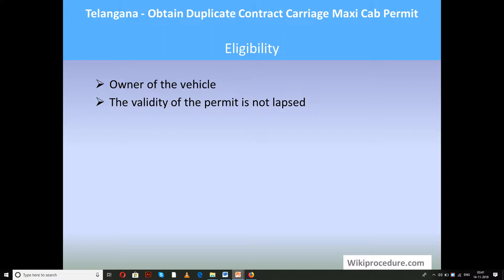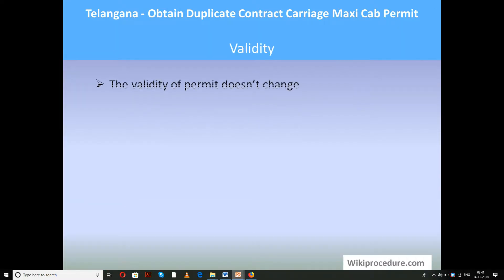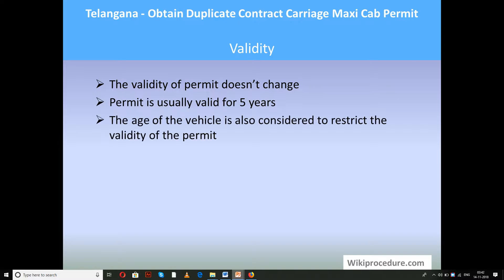Eligibility: the owner of the vehicle is eligible for this permit, and the main condition is that the validity of the permit must not have lapsed. Validity: the validity of the permit does not change because you are applying for a duplicate of the original one. The permit is usually valid for five years. The age of the vehicle is also considered to restrict the validity of the permit.